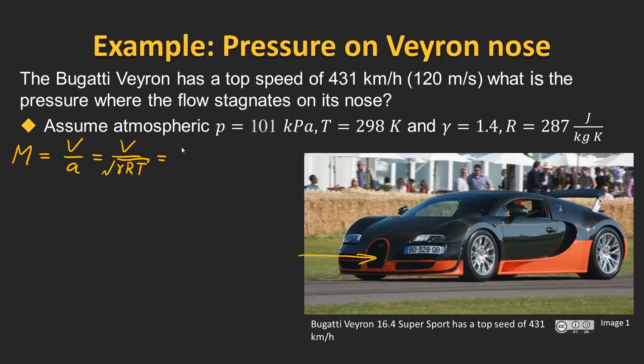So in metres per second the speed of the vehicle is 120, gamma for air is 1.4, the gas constant is 287, and our temperature of the atmosphere is 298 Kelvin. If we go ahead and plug this into a calculator, we're going to find that our Mach number is 0.35.